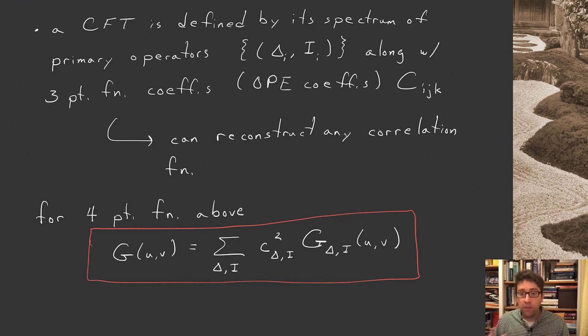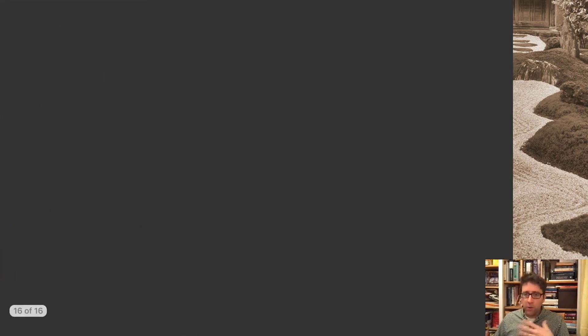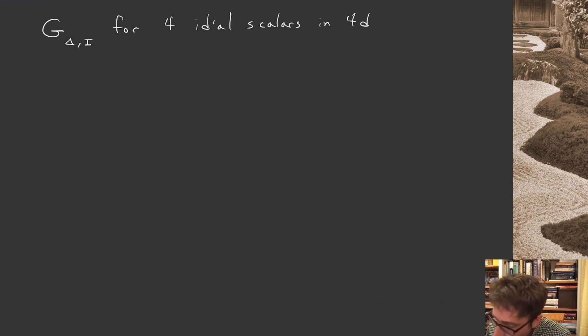I can give you an explicit form for these conformal blocks in the case of four-dimensional field theory. I won't derive this, but I think it's useful to have in your mind that these are explicit objects that you can work with and manipulate. They're not just formal nonsense. So here I want to give you g delta i for four identical scalars in a four-dimensional conformal field theory. I can characterize i by the Lorentz index, just by a spin, a single number l. I believe you only get symmetric traceless representations in the OPE expansion for these four identical scalars.